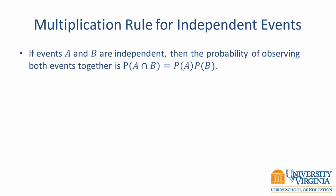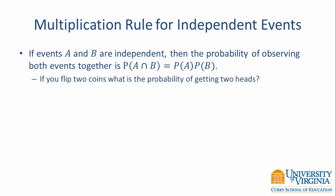The addition rule allows us to compute the probability of A or B. However, there are times when we want to know the probability of A and B. To make that computation, we need to use the multiplication rule. The multiplication rule for independent events says that the probability of event A and B is equal to the probability of A times the probability of B. For example, if you flip two coins, what is the probability of getting two heads? That's the probability of a head on one coin times the probability of a head on the other coin, which equals 0.5 times 0.5.